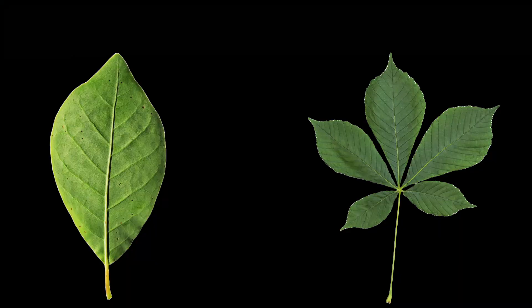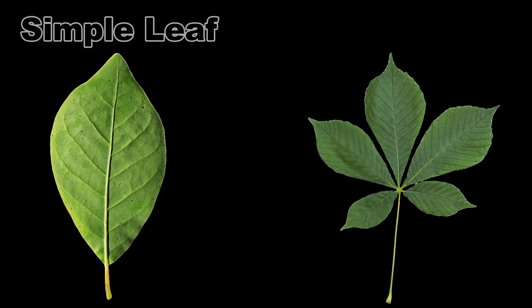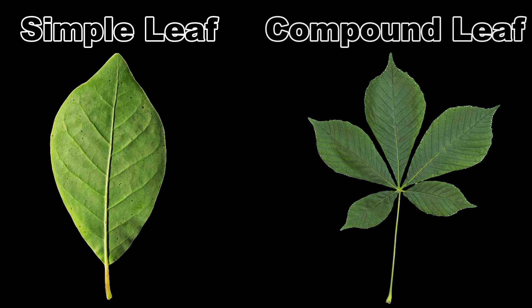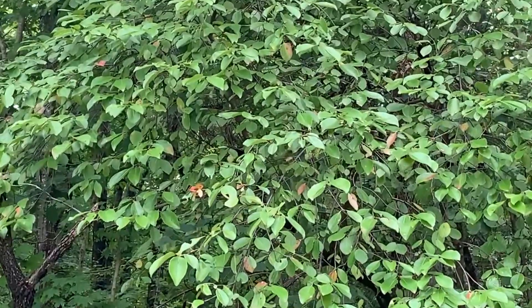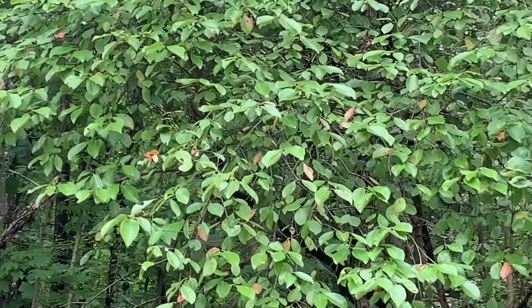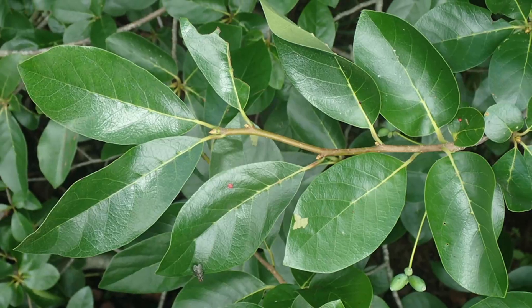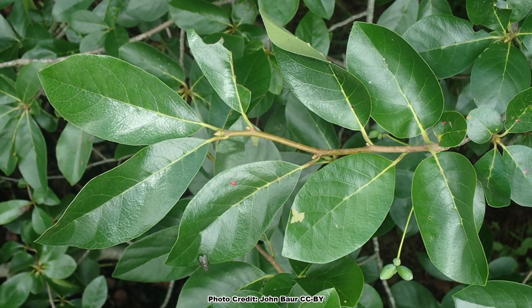Let's start with some basics about the types of leaves before we move on to what defines what is a leaf. There are two types of leaves: simple and compound. A simple leaf looks like what most people think of when you ask them to imagine a leaf. We'll use a black gum leaf as our example because black gum leaves just look like a leaf.